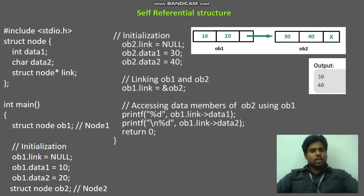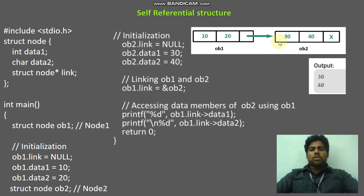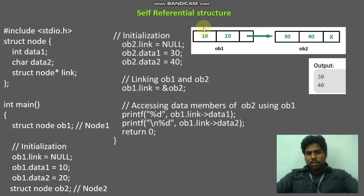I will explain with one example so it is easy to understand. See here, this is the linked list. A linked list means — consider this is one node. These three boxes are one node. Two data values are there. In this node, two data values are there and one link is there. Link is nothing but a pointer, which holds the address of another node. Here, one link holds the address of another variable. Here two nodes are there — one is object 1 and another one is object 2. Inside object 1, two data values and one link are there. This link is holding the address of another node, this starting address.